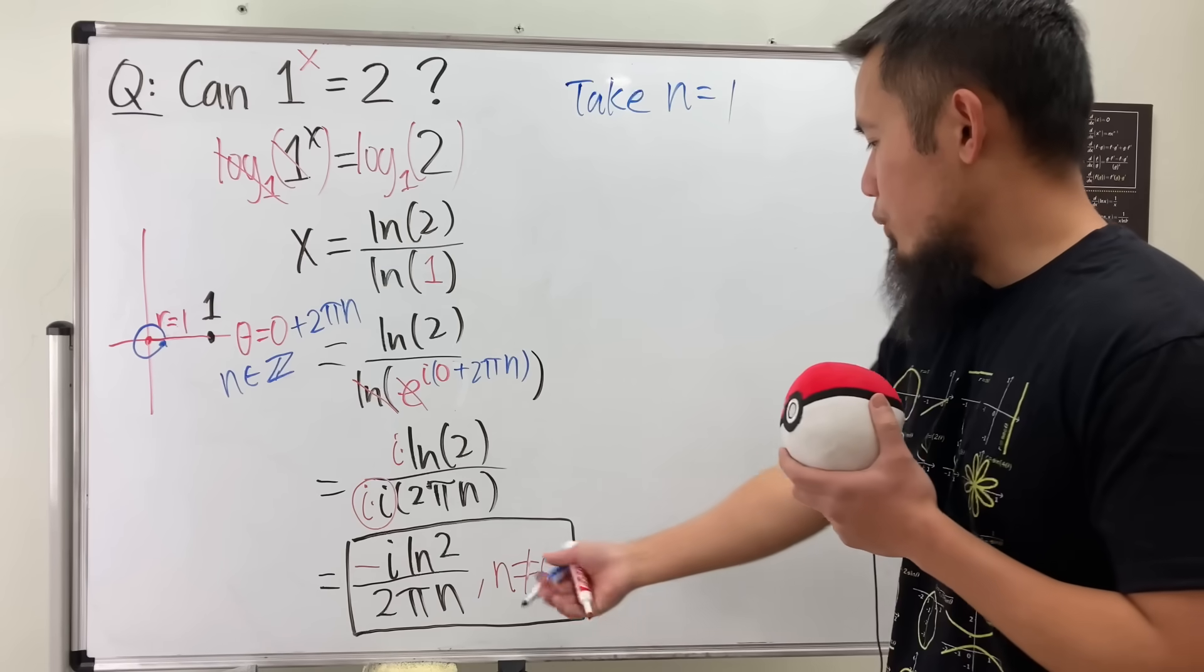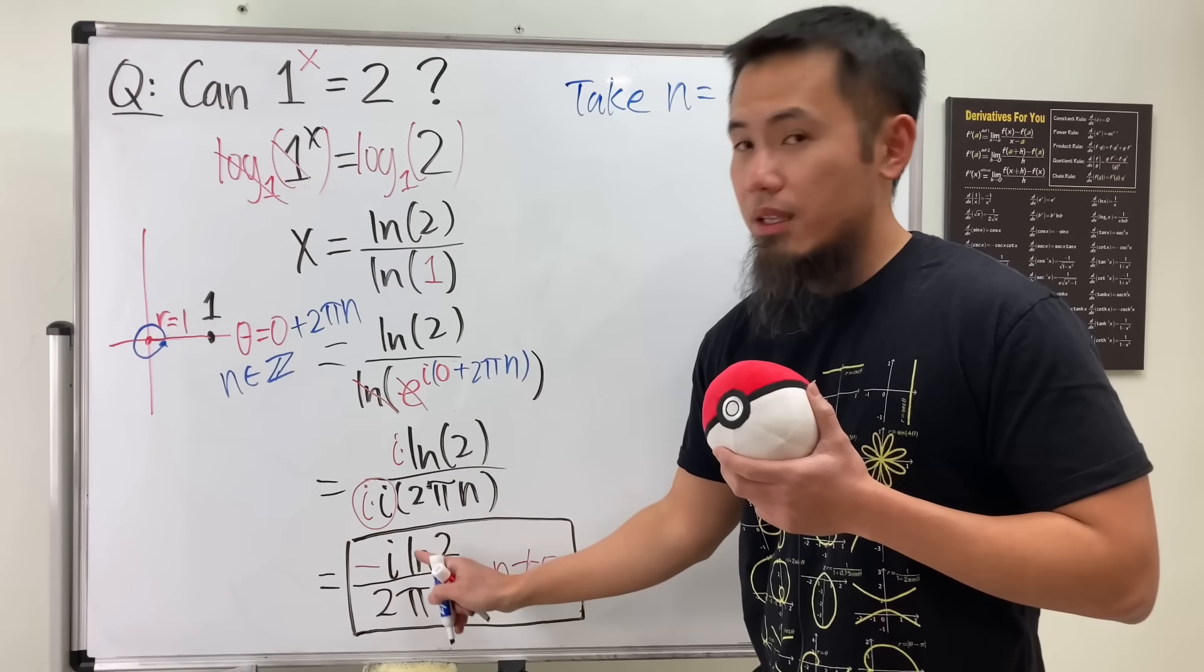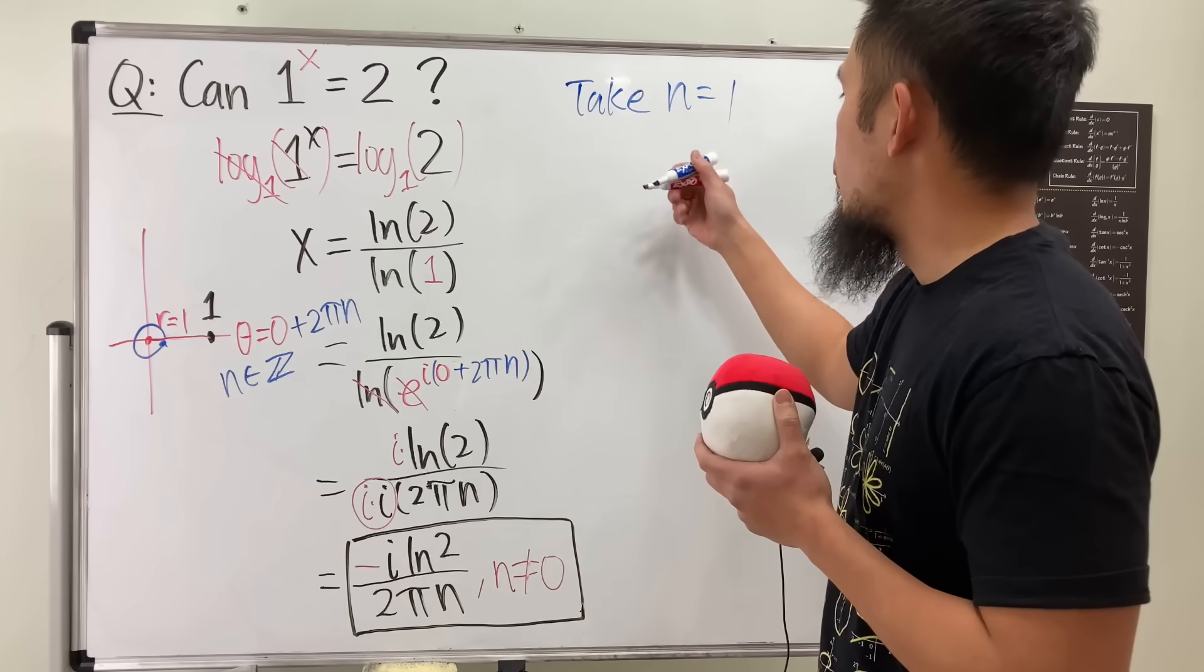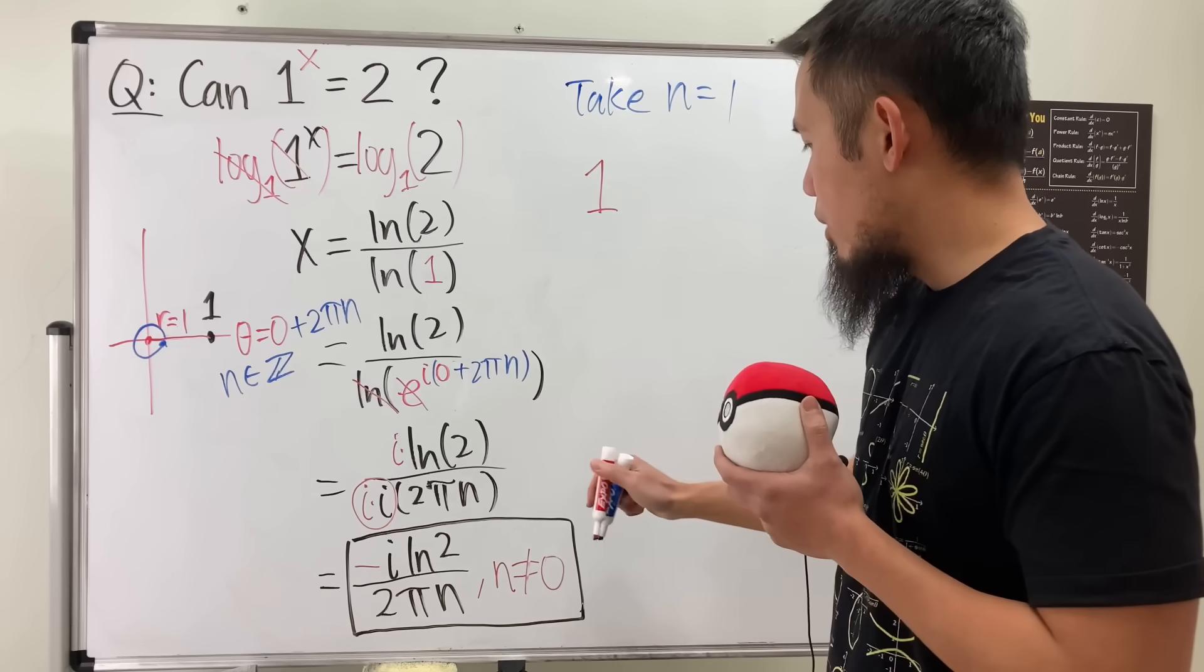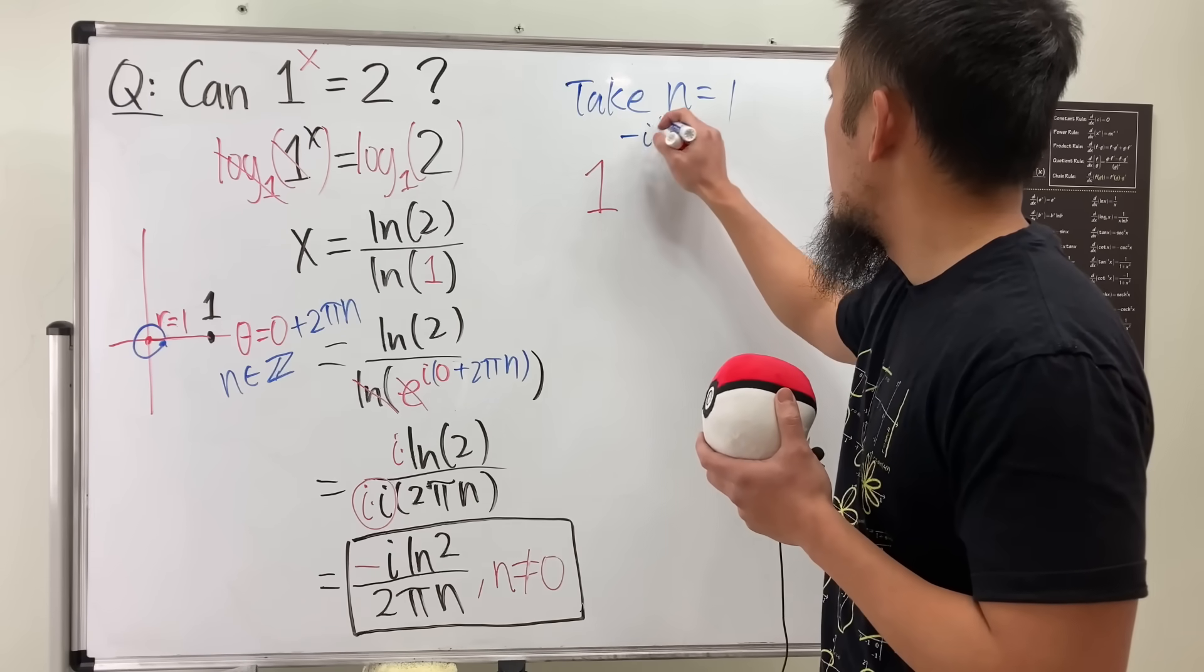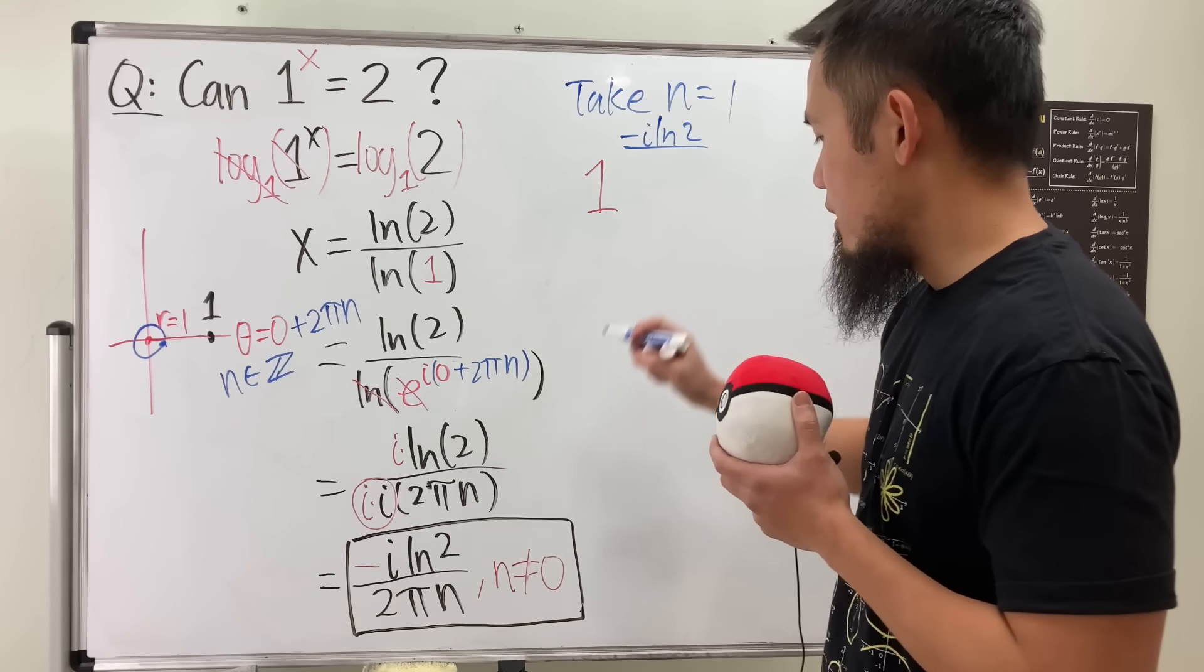So let's say we take n to be 1. So we just have this guy, right? So what we get is just 1 to the power of -i·ln 2 over 2π.